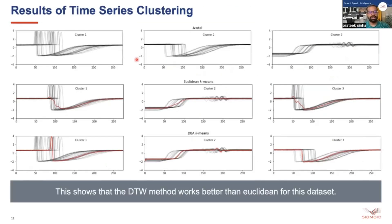With three clusters decided, we use K-means clustering and get the results. The first plot shows the actual clusters we should get; the second shows the Euclidean distance results; and the final plot shows the DTW-based results. We can see that the DTW-based results are very similar to the actual clusters, showing that DTW works better than Euclidean for this data set.